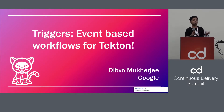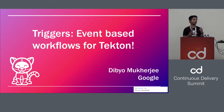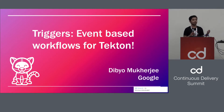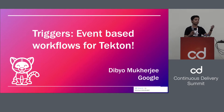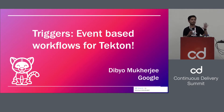One big missing piece for Tekton for a long time was how do you do event-based stuff? Like if I push a commit to GitHub, how do I actually trigger my pipeline? You saw one approach in the previous talk. This is a Kubernetes native, Tekton native way of doing that.